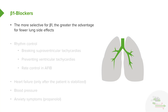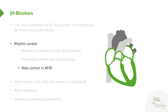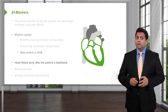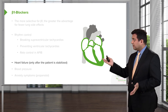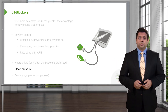The more selective the drug is for the beta-1 receptor, the better it is for the lungs because you have fewer lung side effects — you don't want beta-2 blocking activity. Beta-1 blockers are great for rhythm control: breaking supraventricular tachycardias, preventing ventricular tachycardias, and rate control in atrial fibrillation. We also use beta-1 blockers in heart failure, but only after the patient has been stabilized, and in blood pressure control.